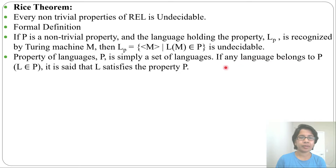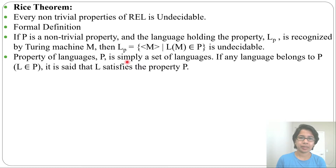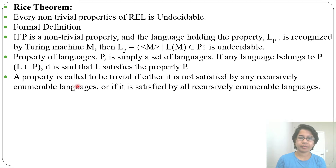A property of a language P is simply a set of languages. If any language L belongs to P, it is said that L satisfies the property P. So a property is just a set of languages — for some set of languages that property will be satisfied, and for the rest it will not.